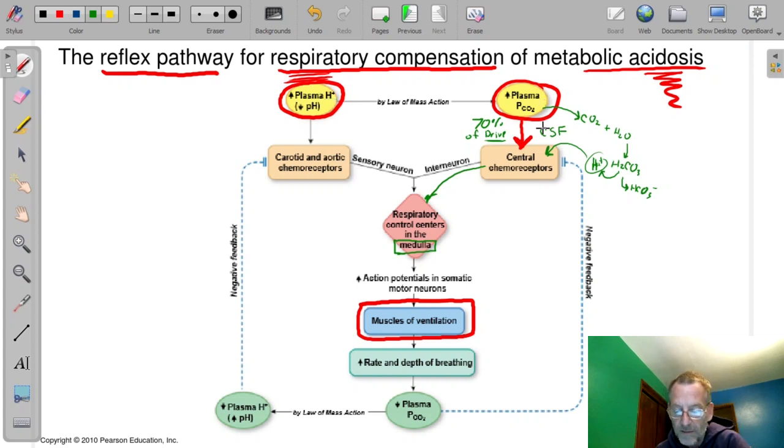They couldn't cross the blood-brain barrier to the central chemoreceptors, but they're in the blood. And they can bind to the chemoreceptors in the carotid and aortic bodies directly. And then that also stimulates the respiratory control centers. More action potentials to the neurons. We increase our rate and depth of breathing. We blow off the CO2.